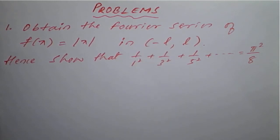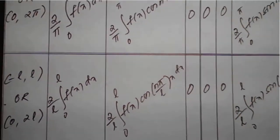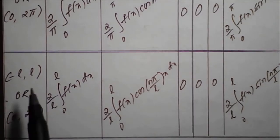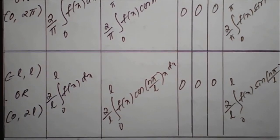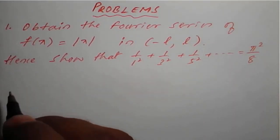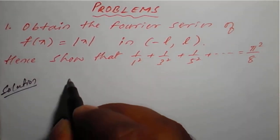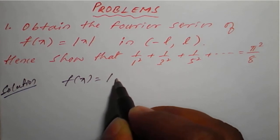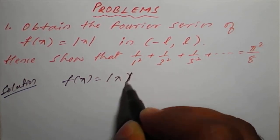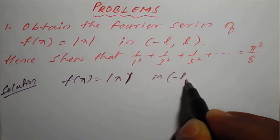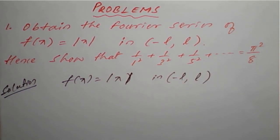The interval is -l to +l, just like -π to +π. We have seen the formulas based on this. First, we need to check whether the given function is even or odd. The given function is f(x) = |x| in the range [-l, +l].